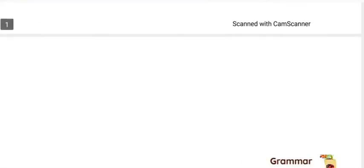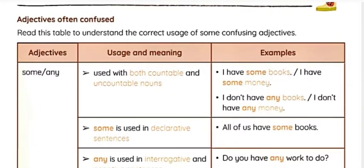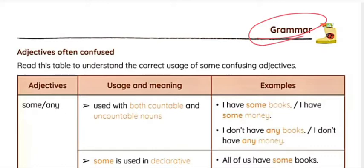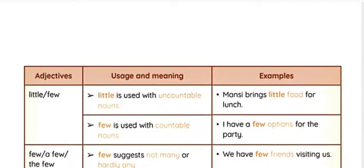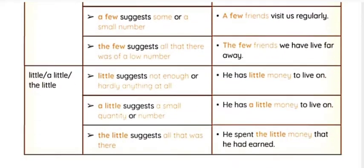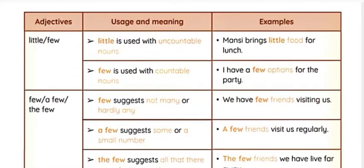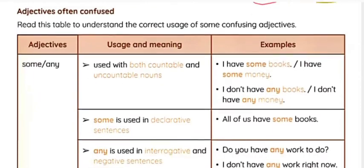Now let's discuss the grammar topic — adjectives often confused. Adjectives tell us about a noun. Here we have some adjectives: some, any, much, many, little, few, a few, the few, a little, and the little. We have uses, meanings, and examples to understand. After understanding this table, we can do the exercises below.